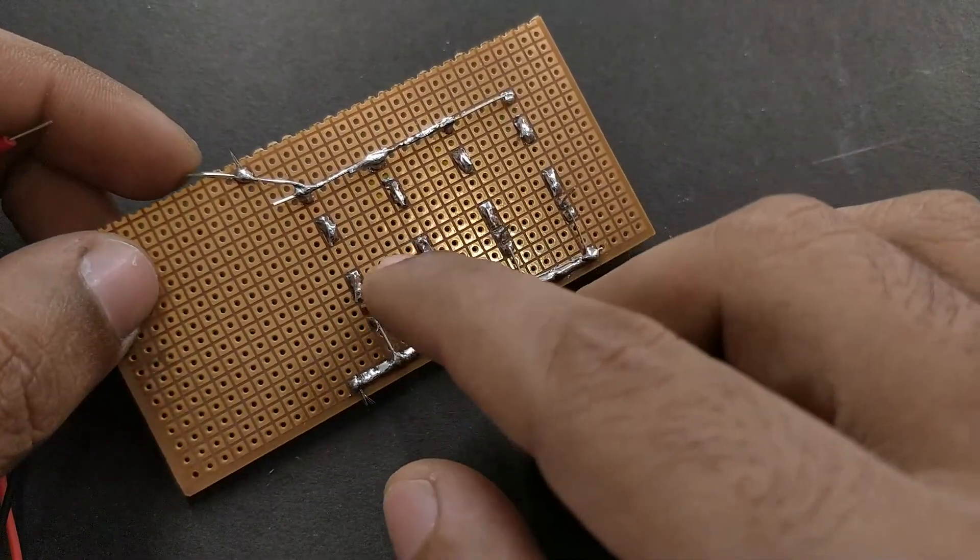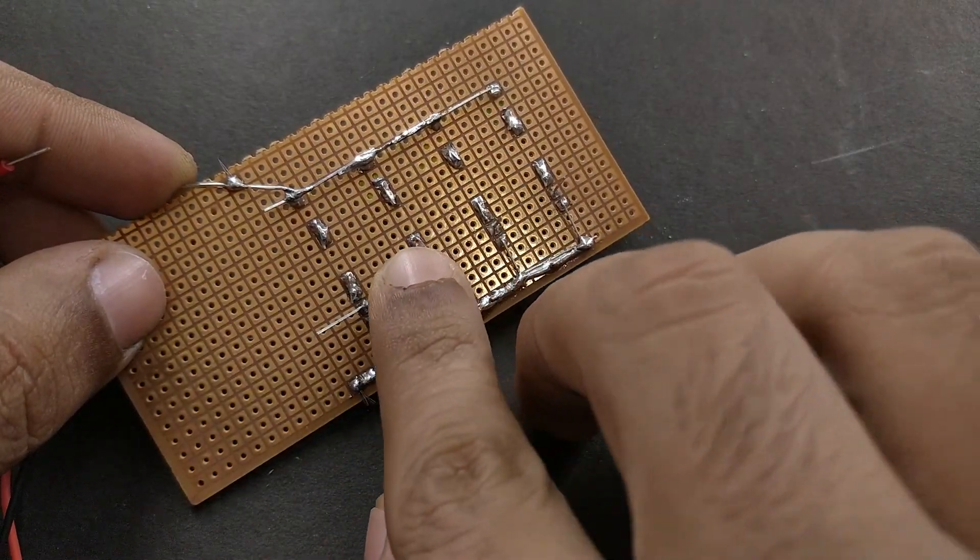Finally, extend the positive lines and the base pin of each transistor using some wires like you see in the video.